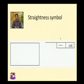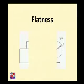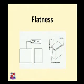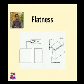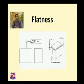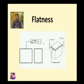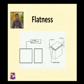Next is flatness. This example shows the flatness of an object. The possible surface variation is shown in an exaggerated, enlarged view. The tolerance is 0.2, meaning the waviness should be within 0.2. The symbol of flatness is drawn accordingly, and at all places the flatness should be maintained within this range.